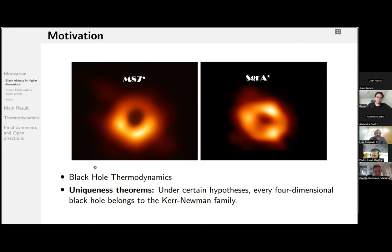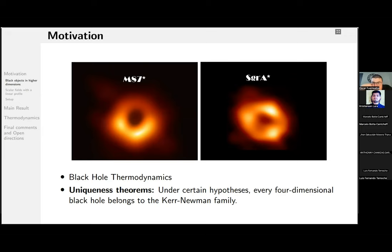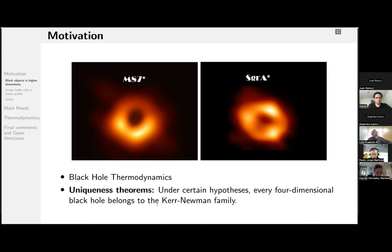And black holes are protected by some uniqueness theorems stating that basically any asymptotically flat black hole with certain conditions, all four-dimensional black holes belong to the Kerr or Kerr-Newman family, in the case of electric charge.